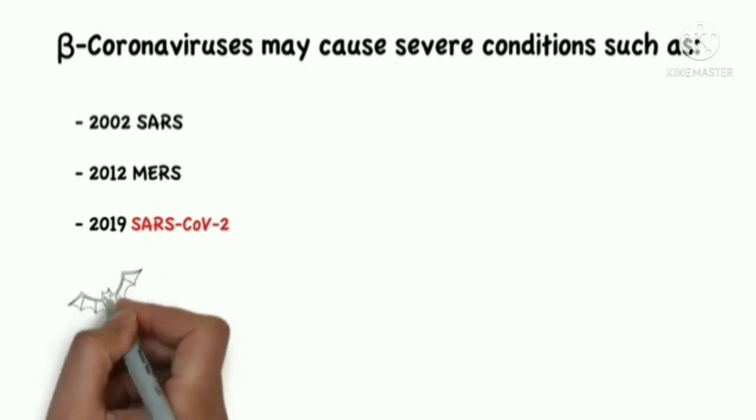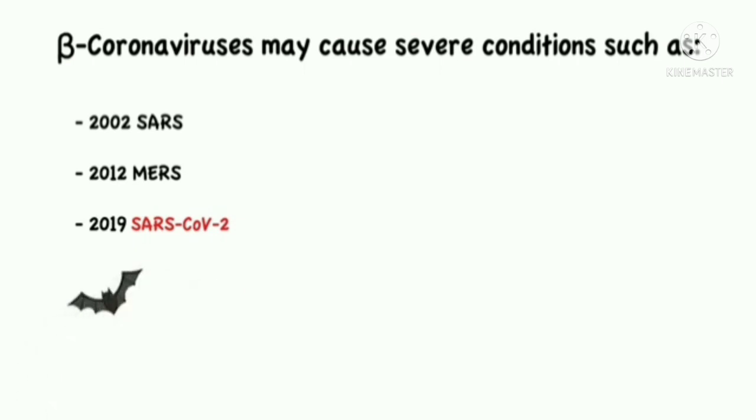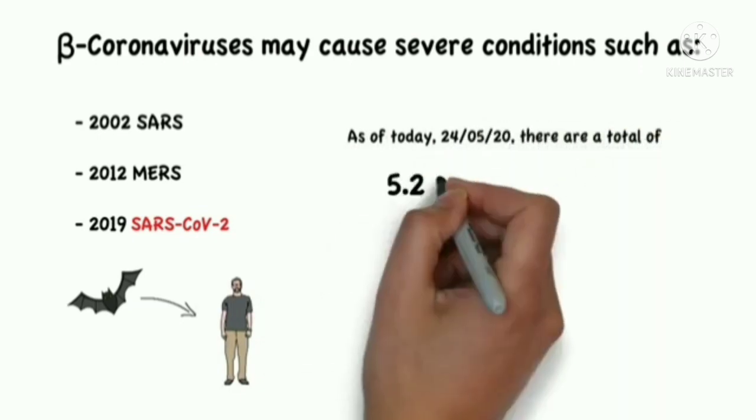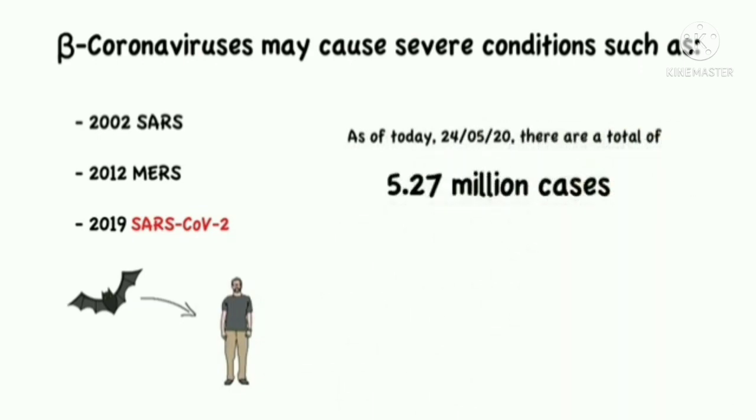It is believed that this virus originated from bats and was passed on to humans in December of 2019 in Wuhan, China. As of today, there are a total of 5.27 million cases worldwide.